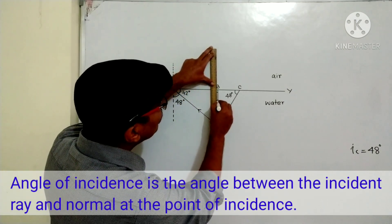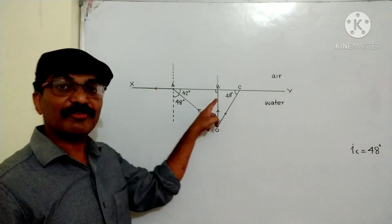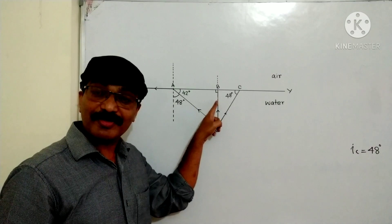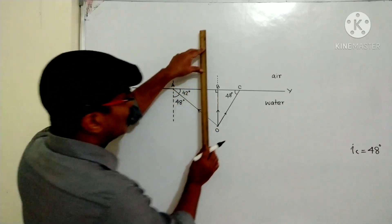If I make the normal here, see, here will be the normal. And angle of incidence will be equal to 0. If angle of incidence is 0, the light ray goes without deviation.